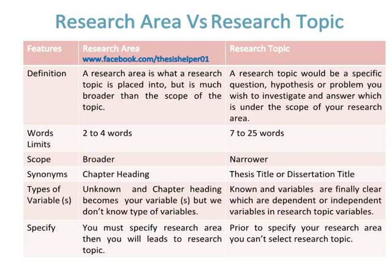Synonyms for research area include chapter heading, major field, and subjects. Synonyms for research topic include thesis title or dissertation title. For a research area, the types of variables are unknown — the chapter heading becomes your variables, but we don't know their type. For a research topic, types of variables are known and finally clear, such as dependent or independent variables.